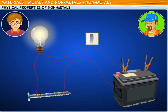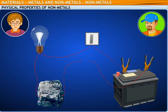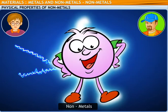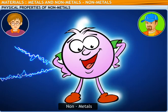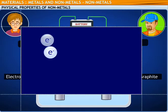Watch this. Wow! I see the electric bulb glowing. The iron nail is a metal, so it conducts electricity. Now, replace the iron nail with a piece of charcoal. The bulb is not glowing. That's because non-metals do not allow electricity to pass through them. Graphite, being a non-metal, conducts heat and electricity. This is due to the presence of free electrons.